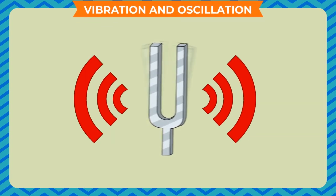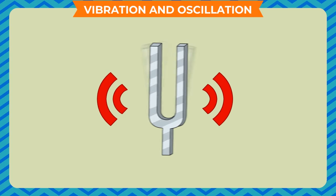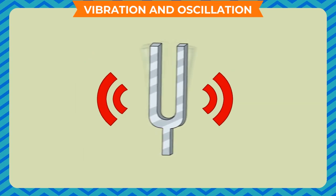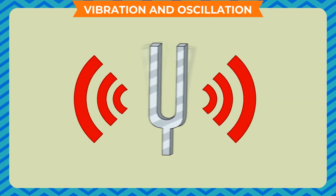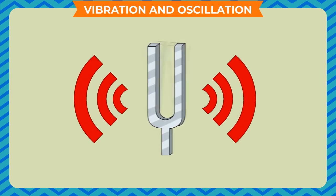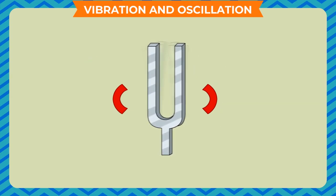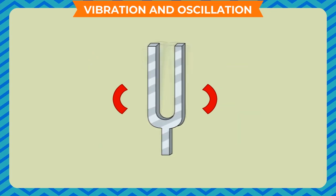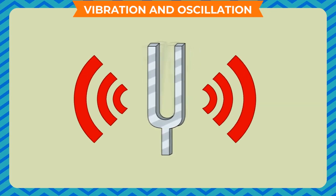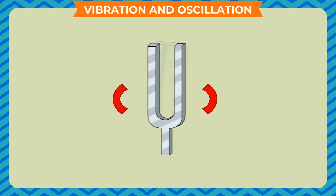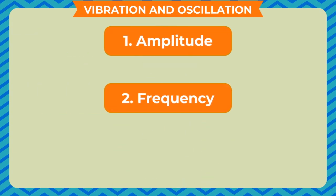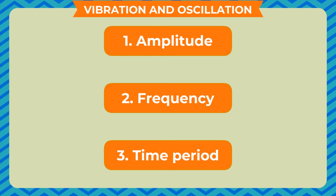Vibration and oscillation. Vibration is the to and fro movement of particles about their mean position. When these vibrations take place at a lesser speed, we call them oscillation. Any vibration or oscillation is described by three terms: amplitude, frequency, and time period.